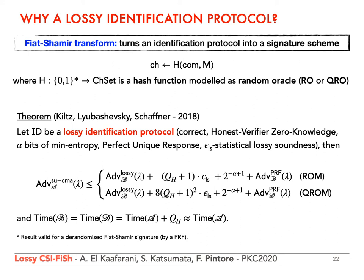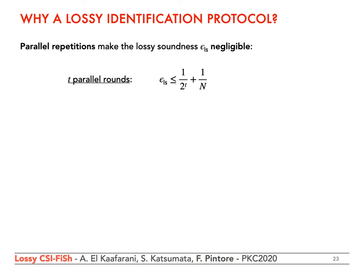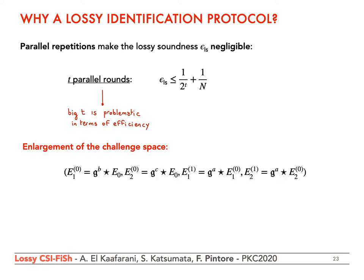A natural observation would be: the epsilon_ls of your scheme is not really small, since it equals 1/2 + 1/(2N). This is true, but it is typical to make lossy soundness negligibly small by standard parallel repetitions of the identification protocol. Specifically, T parallel rounds make epsilon_ls equal to 1/2^T + 1/N. However, standard parallel repetitions may be problematic for the efficiency of the digital signature scheme. So we have another option: decrease the 2 in the denominator, which derives from the cardinality of the challenge space containing 0 and 1. We adapted the tricks introduced in CSide and CSeaFish to enlarge the challenge space of our lossy identification protocol.